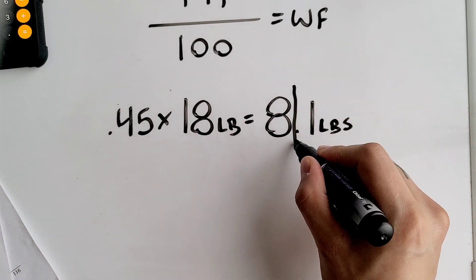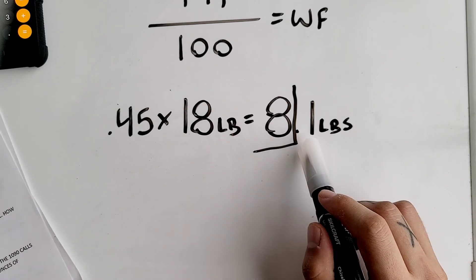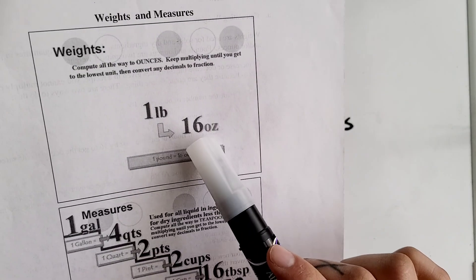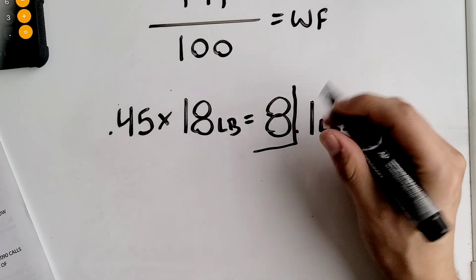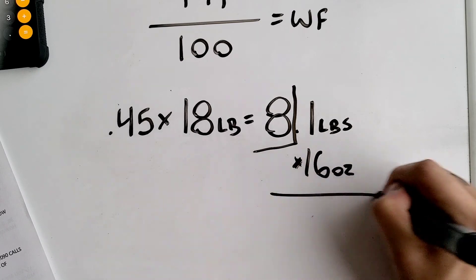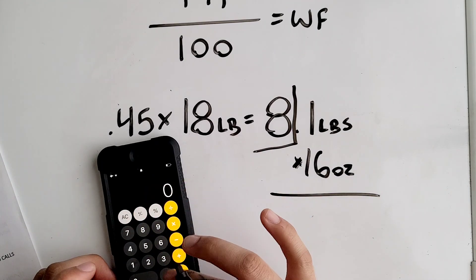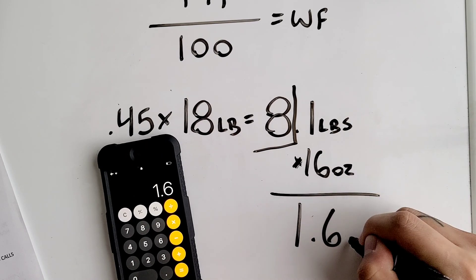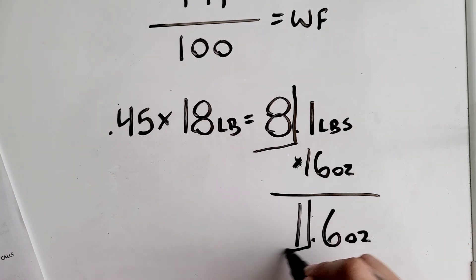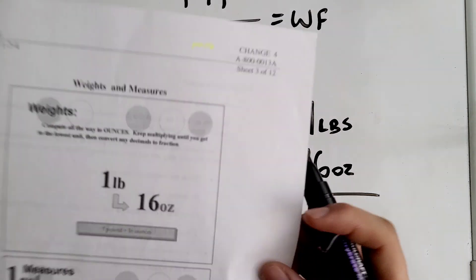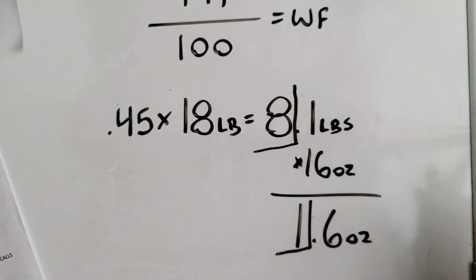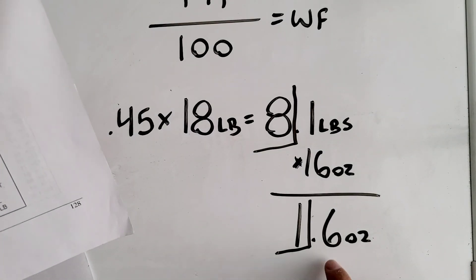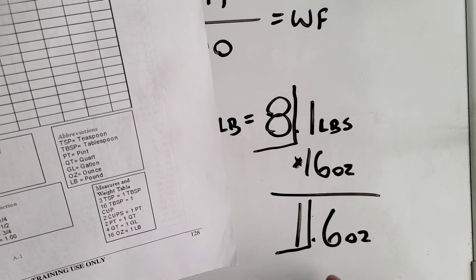After that, you block off your whole number again. We can't leave it like that because we're trying to get it to its lowest unit, which is ounces. So we multiply the remaining decimal by 16 ounces. So 0.1 times 16 equals 1.6 ounces. We block off our whole number again and try to get it to its lowest unit. Since ounces is our lowest unit, we go to our decimal-to-fraction chart to determine where this decimal falls.